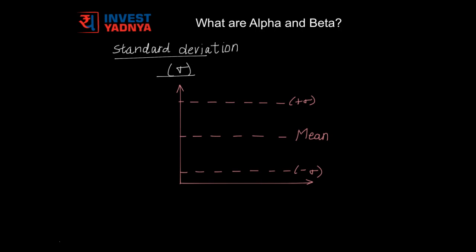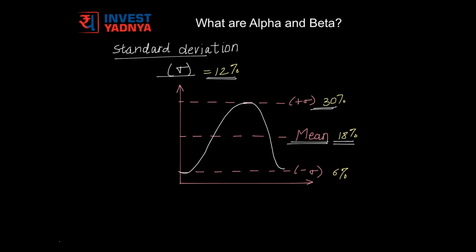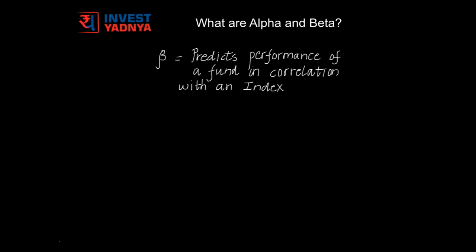Standard deviation indicates what would be the fund performance in correlation with its mean. For example, if there is a fund with average returns of around 18% and a standard deviation of 12%, this indicates that when the markets rise, this particular fund could make returns of around 30%, and when the markets plunge, the returns could go down as low as 6%. So standard deviation tells us what would be the fund performance in correlation with its mean.